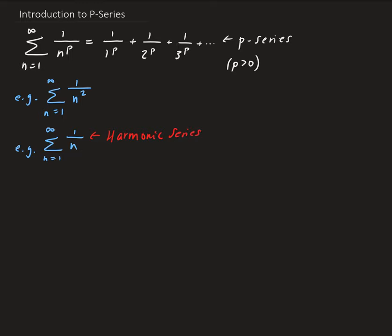Here's another example: the series from 1 to infinity of 1 over n to the pi. Remember, p can be anything strictly bigger than 0. The question here is: what values of p will this series converge for? That's the next thing we're going to look at — the convergence of p series.